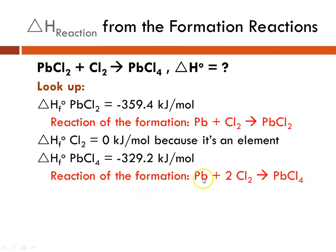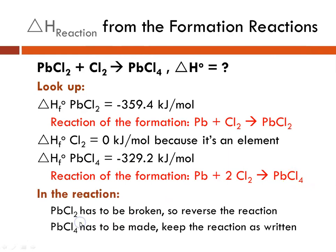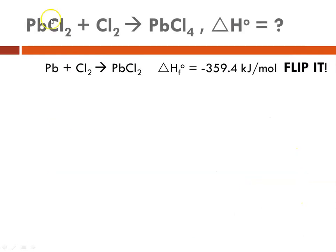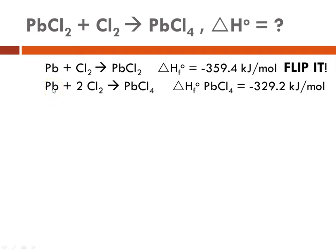The formation reaction for lead(IV) chloride would be lead plus 2 chlorines to get lead(IV) chloride. In this overall reaction, the lead(II) chloride has to be broken, so we're going to have to reverse that equation because lead(II) chloride is a reactant. The lead(IV) chloride has to be made, so we keep it as written. When doing these summations, make sure reactants are on the reactant side and products are on the product side. Flipping an equation changes the sign of its delta H — if it's negative in the forward direction, it will be positive in the reverse direction.